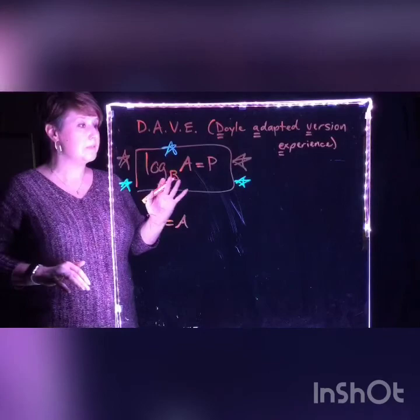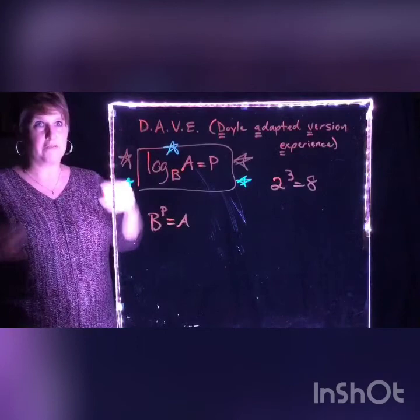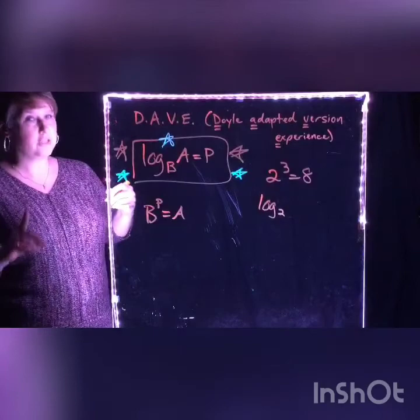Just to show you with numbers how this works — if I have something we're comfortable with: two to the third equals eight. So two is my base, three is my power, and if I put two to the third power, the answer I get is eight. So as a logarithm, it's going to look something like this: log base two.